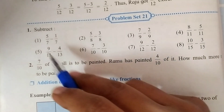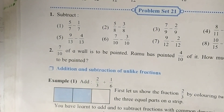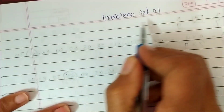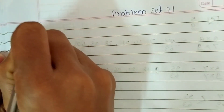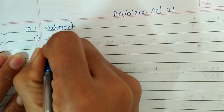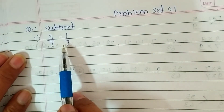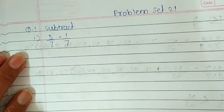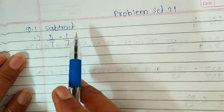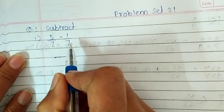The first question is subtract. There are eight sub-questions and the first sub-question is 5 upon 7 minus 1 upon 7. Here we have two like fractions. When we are going to subtract like fractions we have to just ignore their denominators and consider their numerators.